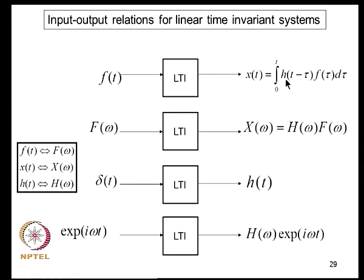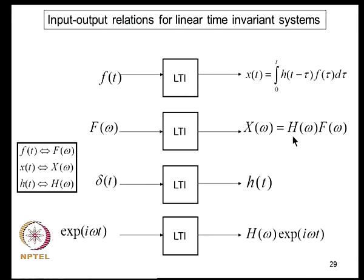The impulse response function h(t) is the system's response to a unit impulse. The frequency response function H(omega) is defined by the response to a unit harmonic excitation: input e^(i*omega*t) produces output H(omega)*e^(i*omega*t). Importantly, h and H form a Fourier transform pair, and similarly the input F and its Fourier transform F̂ form a Fourier transform pair.